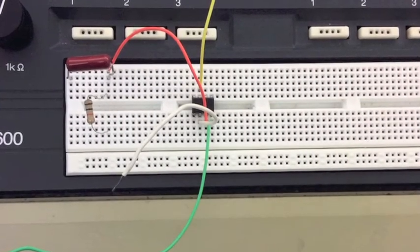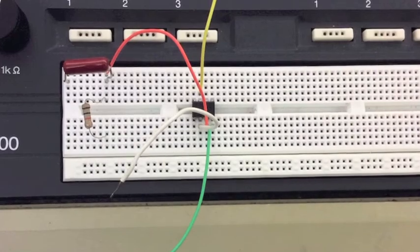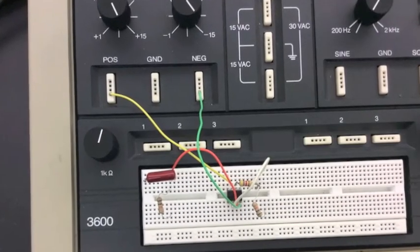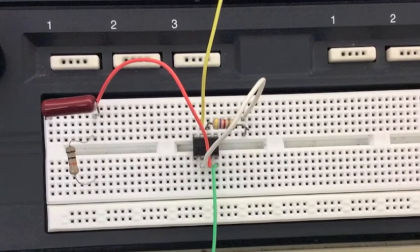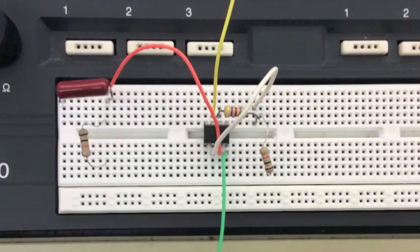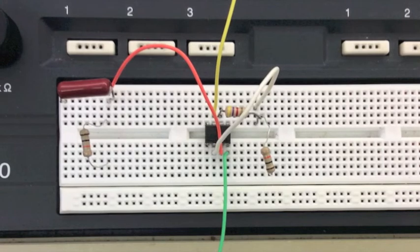Then, from the op-amp, I will connect the rails to a positive 15V input and a negative 15V input. After this, I will connect the output to a 4.7k ohm resistor and a 10k ohm resistor that will go to ground.